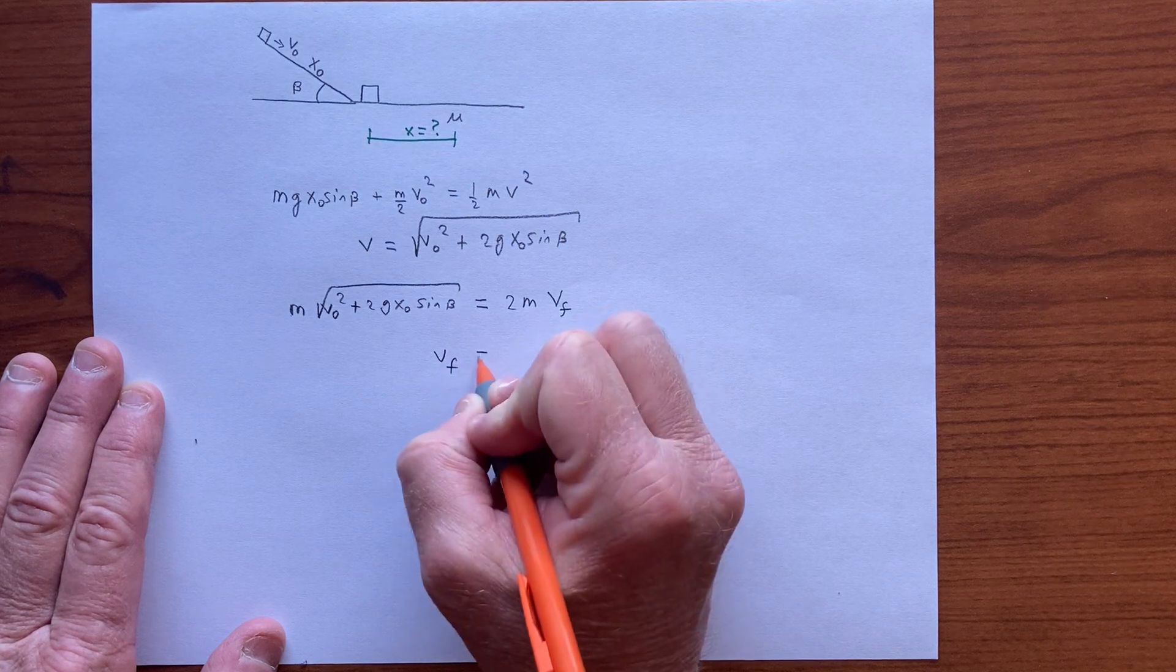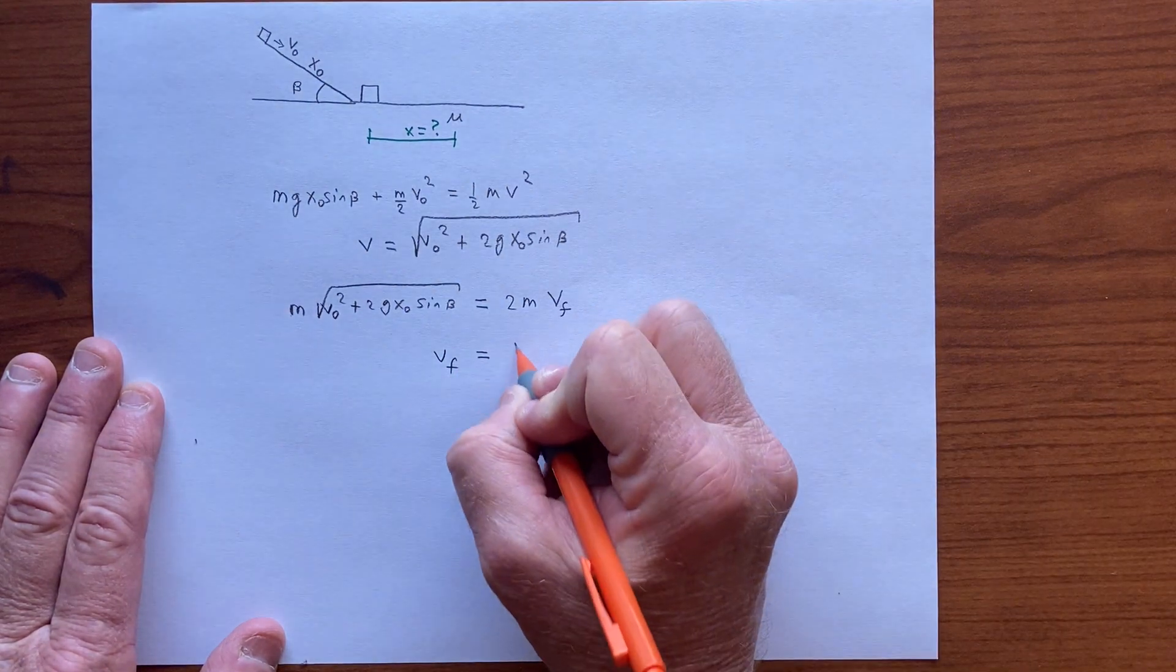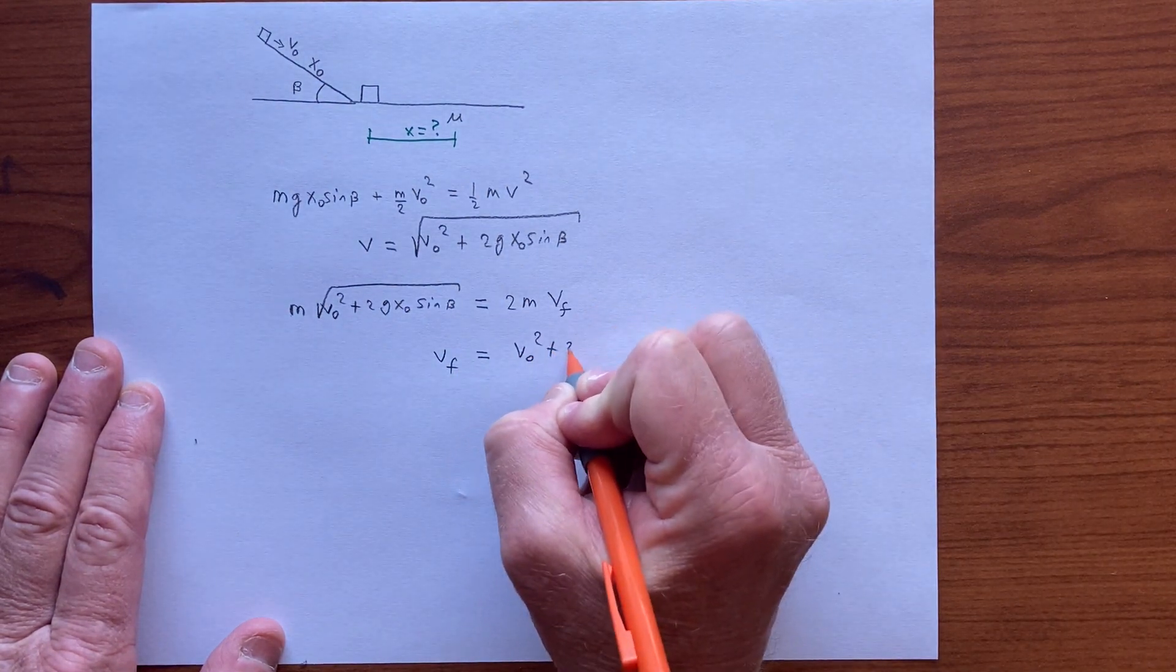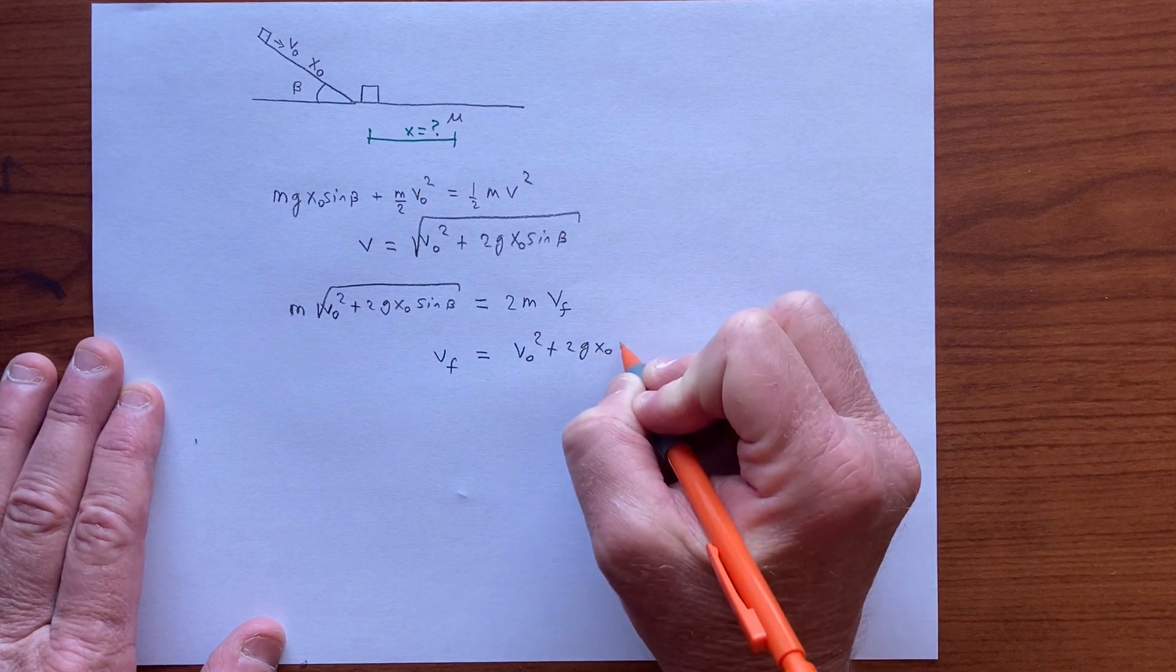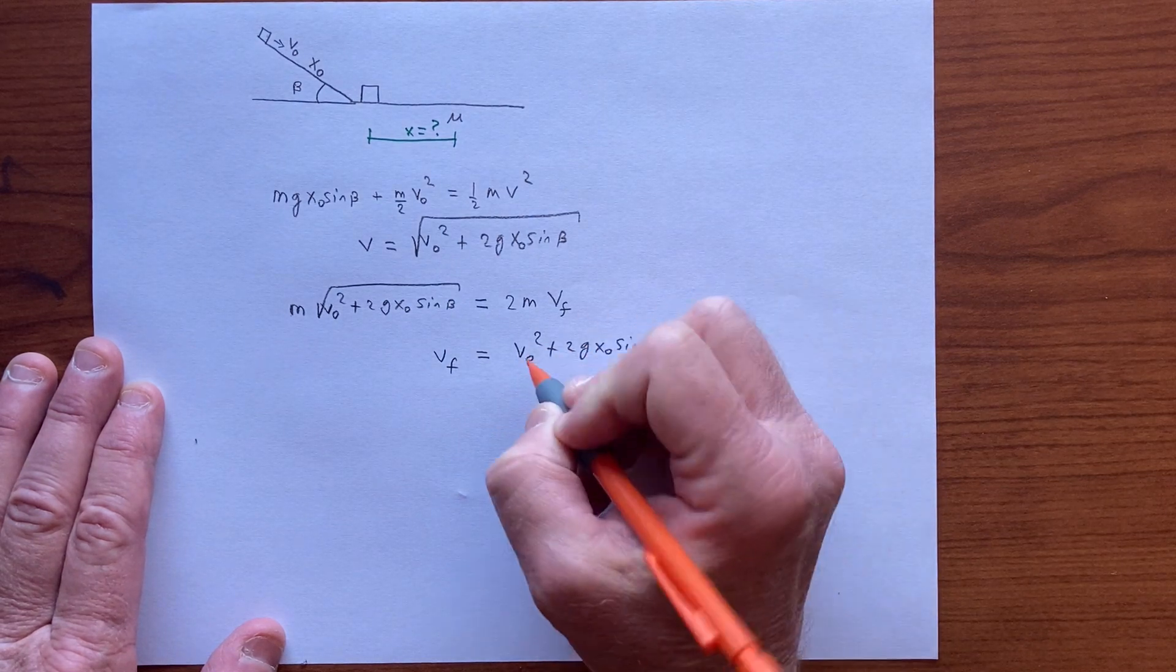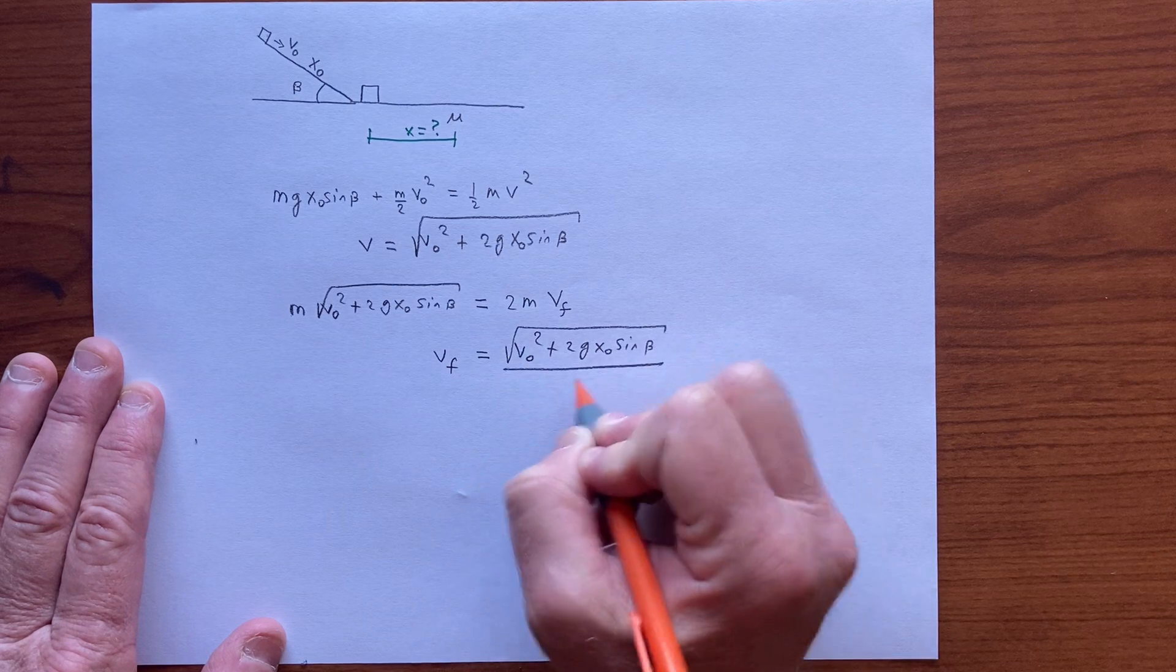And so that speed after the collision is square root of v-naught squared plus 2g x-naught sine of beta over 2.